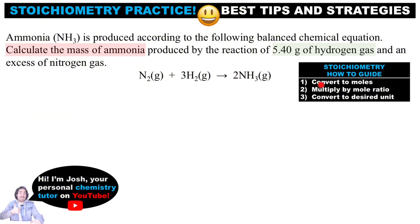In this problem, we need to first convert the amount of hydrogen gas into moles, and then we can use a mole ratio that compares hydrogen to ammonia. It's 2 over 3. Finally, we need to convert to grams of ammonia using the molar mass.